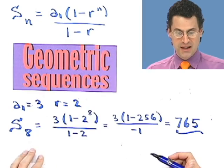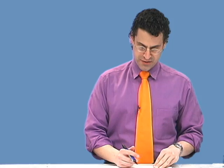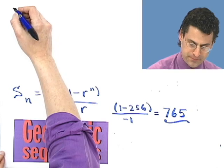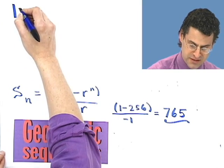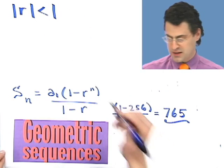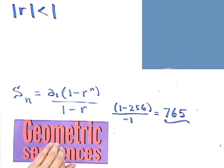So that's great. I found the sum of the first 8 terms without ever having to list all 8 terms and add them up — I was able to do it in one fell swoop. Now I want to show you one last really cool thing. Let's suppose that r is not that big — in absolute value, it's less than 1.